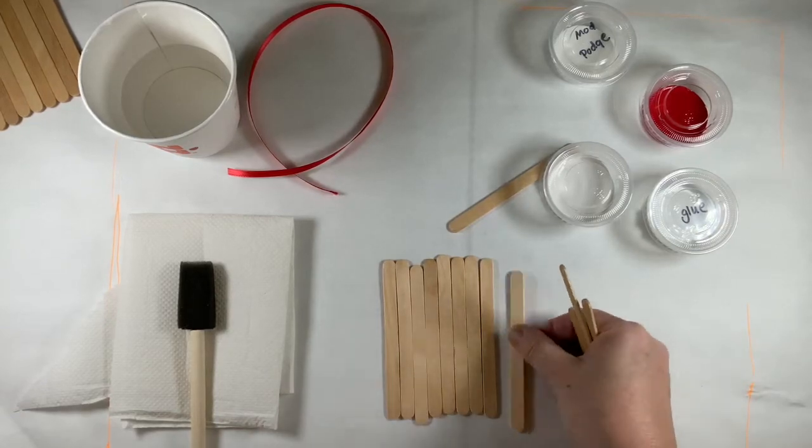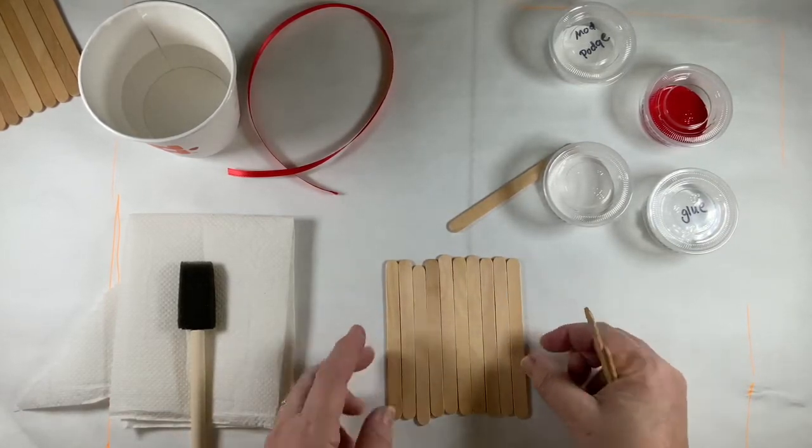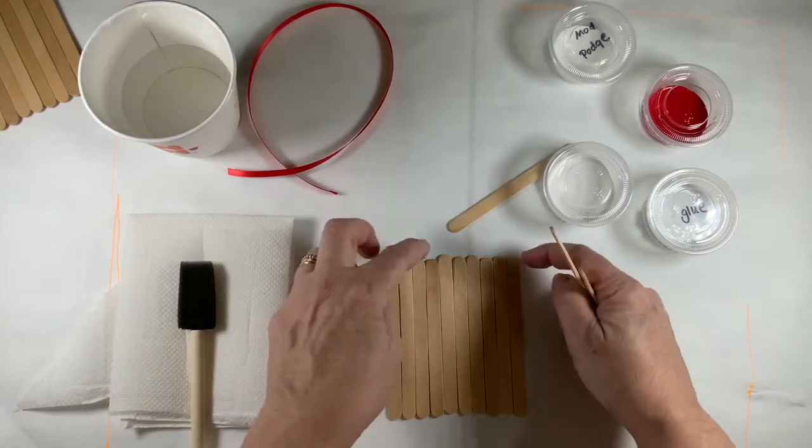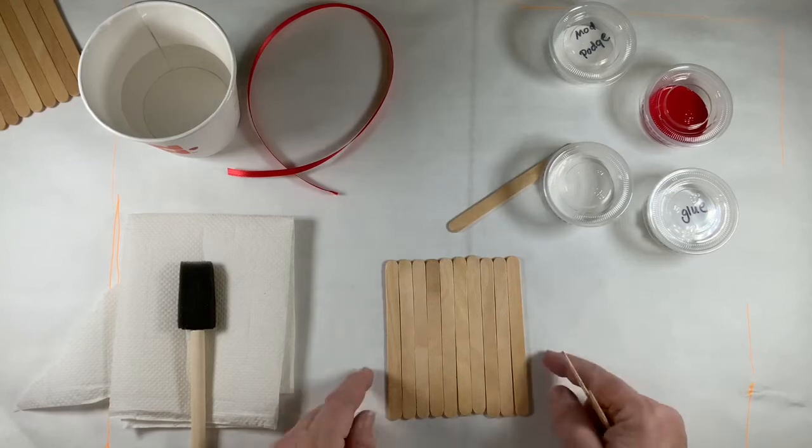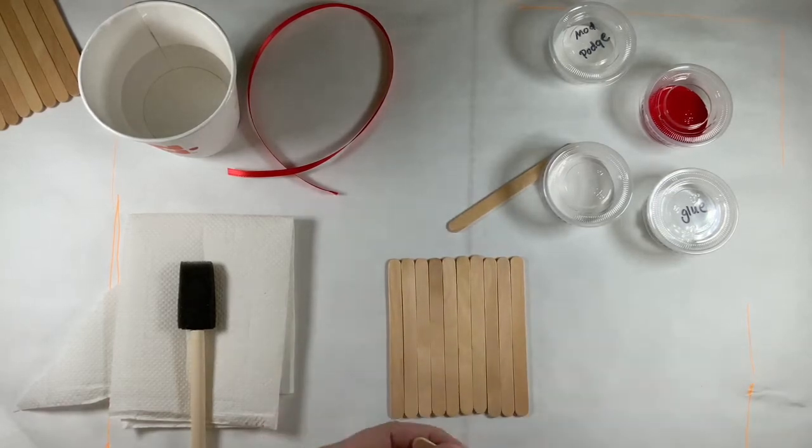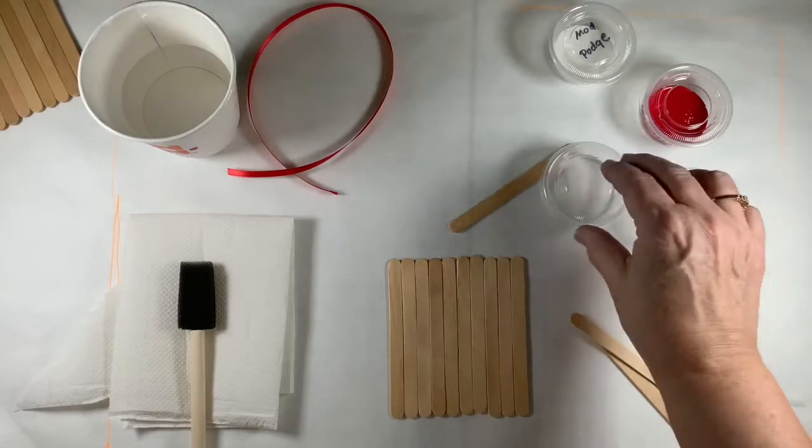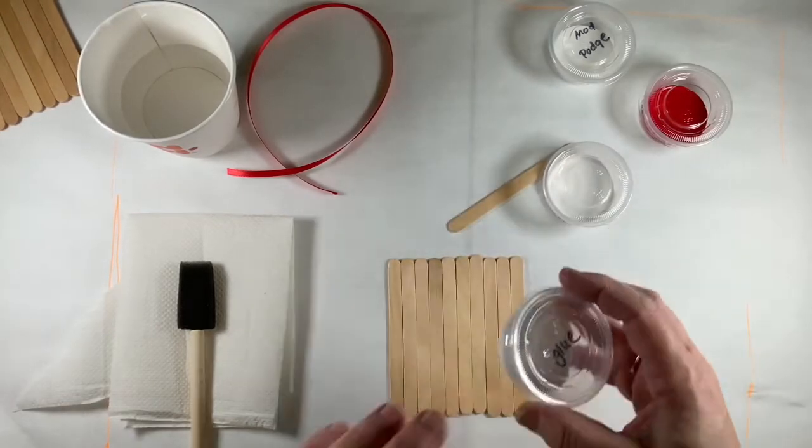We're going to lay out and count 10: 1, 2, 3, 4, 5, 6, 7, 8, 9, 10. And then we can arrange them so that they're somewhat even up top and on the bottom.